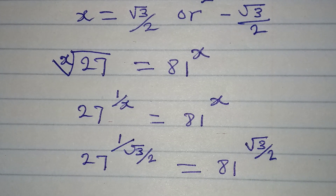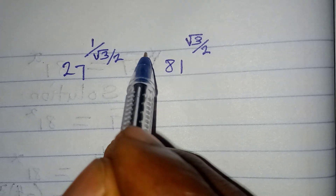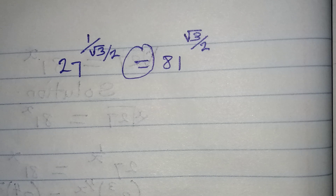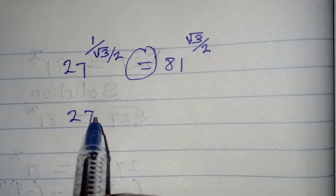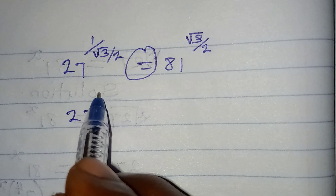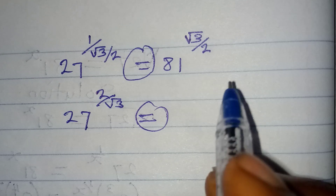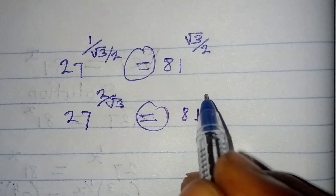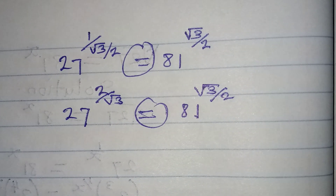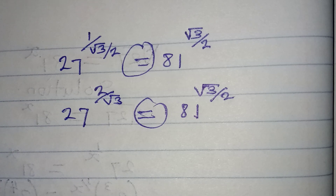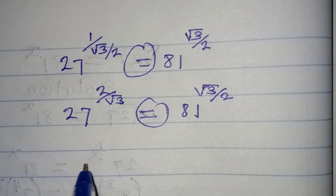Let me check both sides — they may or may not be equal yet. On the right side, 81 to the power of root 3 over 2: since 81 is 3 to the power of 4, this becomes 3 to the power of 4 times root 3 over 2.